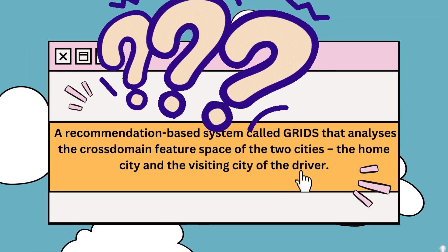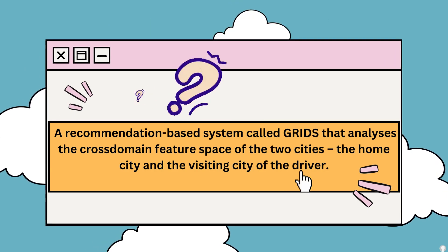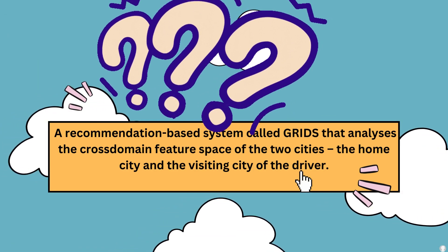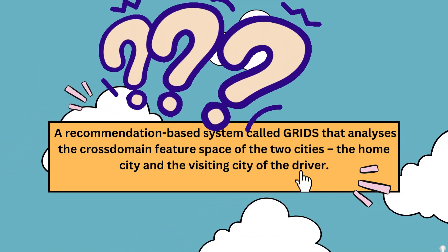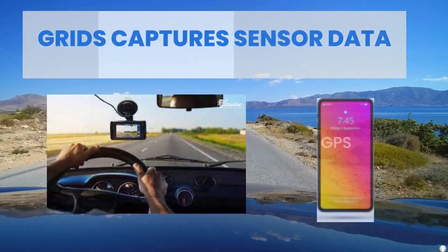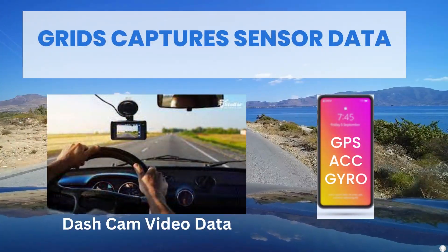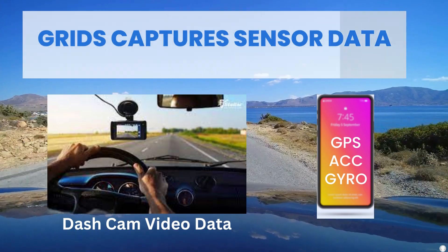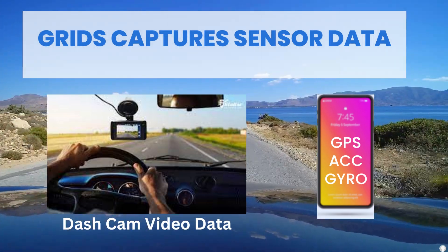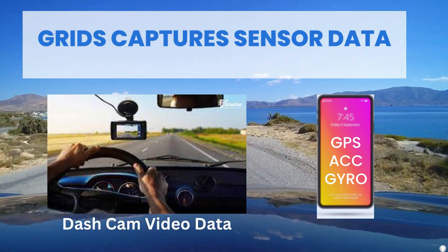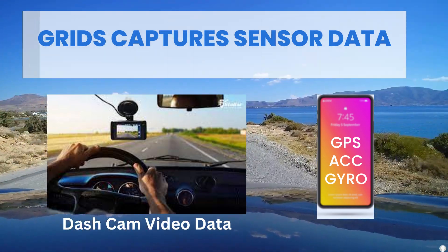This recommendation-based system, called GRIDS, analyzes the cross-domain feature space of the two cities — the home city and the visiting city of the driver. For this purpose, GRIDS captures sensor data from the dash cam video using the Nexar Pro dash cam, and from smartphone sensor data including GPS, accelerometer, and gyroscope.